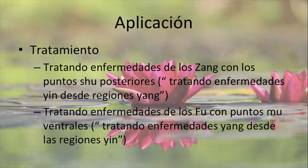En el tratamiento, los puntos Shu posteriores tratan muchas enfermedades de los Zang. Esto se basa en un principio que vimos en teoría básica: como los puntos Shu posteriores están en la región posterior del cuerpo, y la región posterior es más Yang, yo coloco una aguja en la región posterior y lo que hago es influir sobre la región anterior donde están los Yin. Digamos que se basa en ese principio: tratar enfermedades de los Zang con los puntos Shu posteriores, tratando enfermedades Yin desde la región Yang.